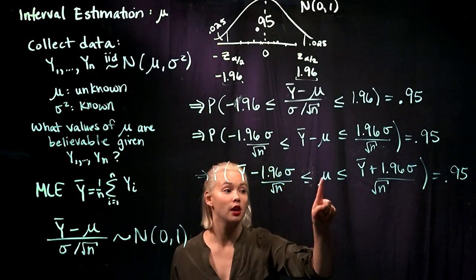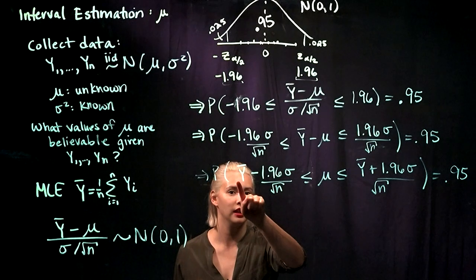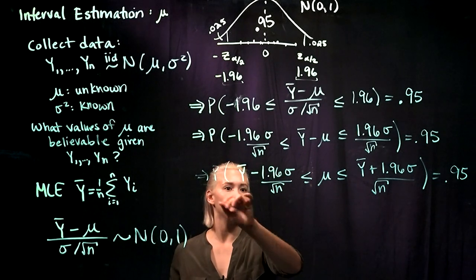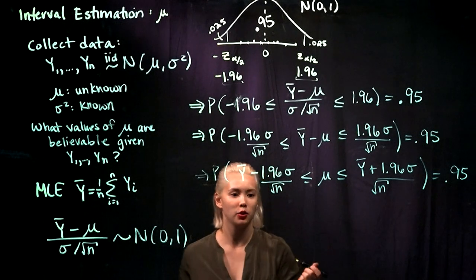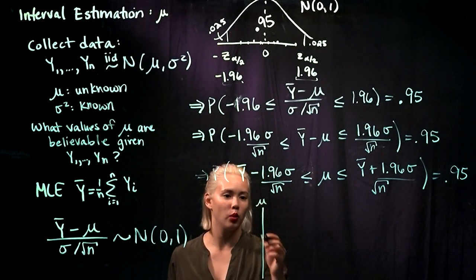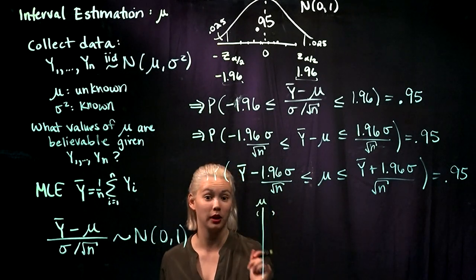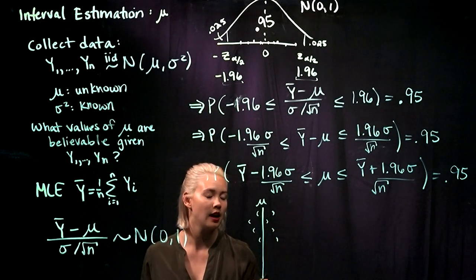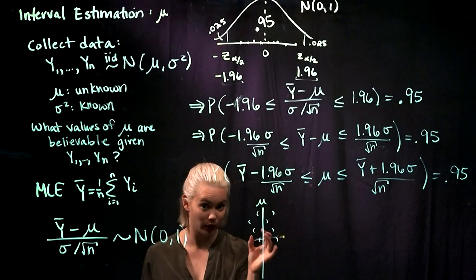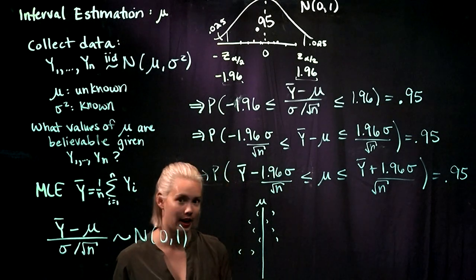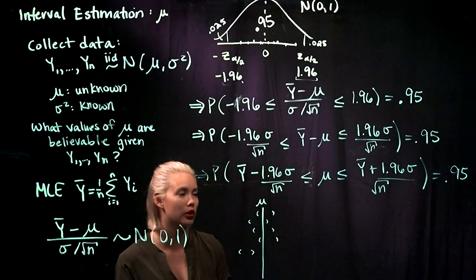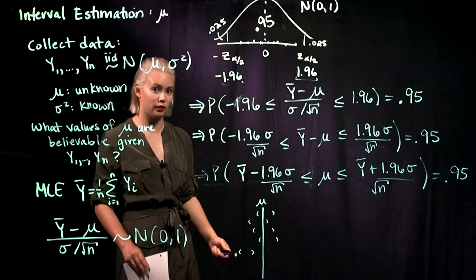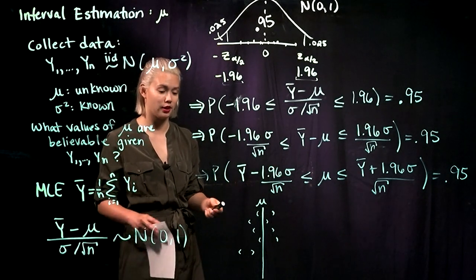The probability that this random interval covers mu is 0.95. Mu is constant — the interval is what's random, jumping around. One interval might hit mu here, another there, another in a different place. 95% of these random intervals are going to contain mu, and 5% will not. So mu is fixed, the interval is random, and 95% of these confidence intervals will contain mu while the other 5% will not.